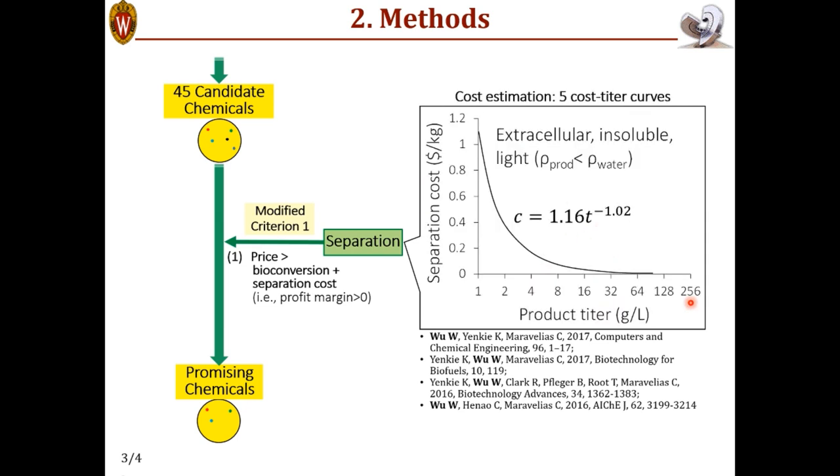So with this method, we've further generated a set of curves that express the separation cost as a function of the product titer, or the product concentration after bioconversion, but before separation. And we have a curve for each of the five classes of products. For example, this one is for a product that is extracellular, which means it is excreted to the outside of the microbial cells. And it's also insoluble in water and lighter than water in terms of density.